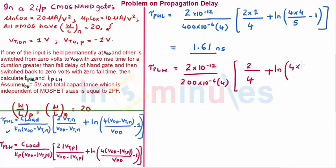Plus ln of 4 times V_DD minus V_TP, so 4 × 4 upon 5 minus 1. If you solve this, you will get 3.22 nanoseconds.